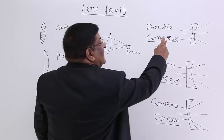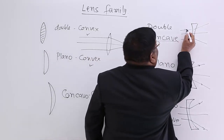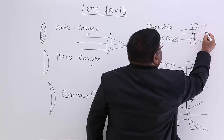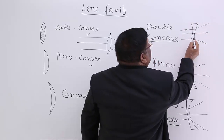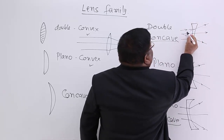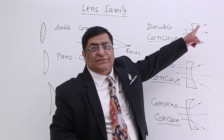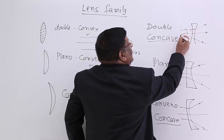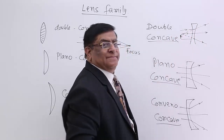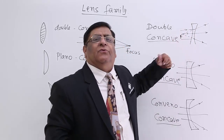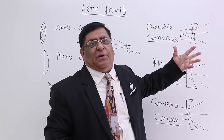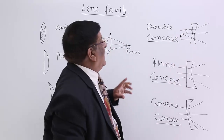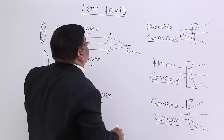In the case of a diverging lens, parallel rays diverge in such a way that all appear to come from a single point — this point is also known as the focus. Focus is an important point, and it indicates the power of the lens.